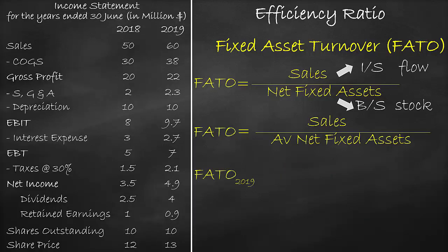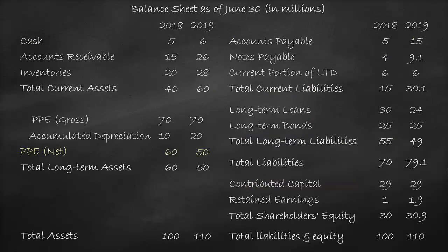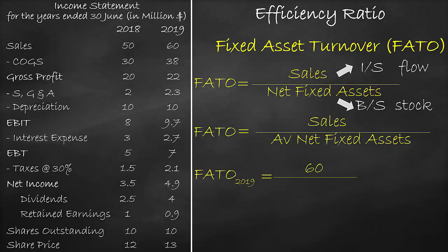Next, let's calculate the fixed asset turnover ratio for the year 2019. Sales in 2019 is equal to $60 million. Let's look at the balance sheet for the average of the net fixed assets in 2019 and 2018. We have net fixed assets of $50 million in 2019 and net fixed assets of $60 million in 2018. So, in our formula, we will divide by average net fixed assets of ($50 million plus $60 million) divided by 2, which is equal to 1.09 times.